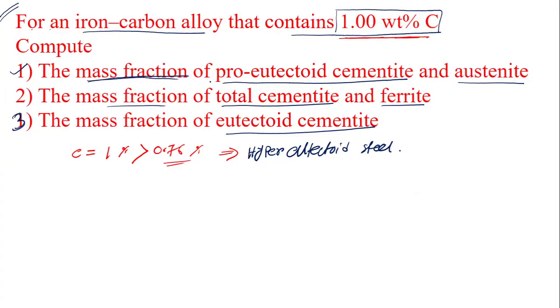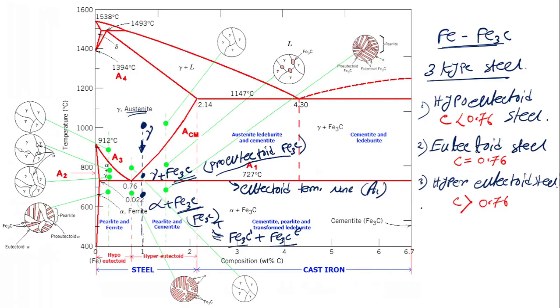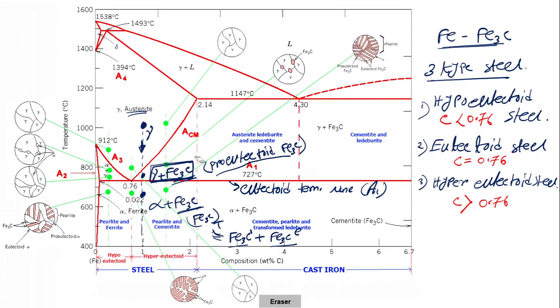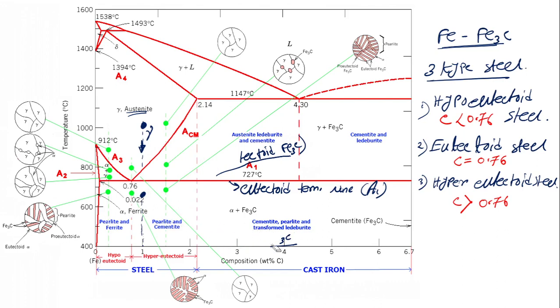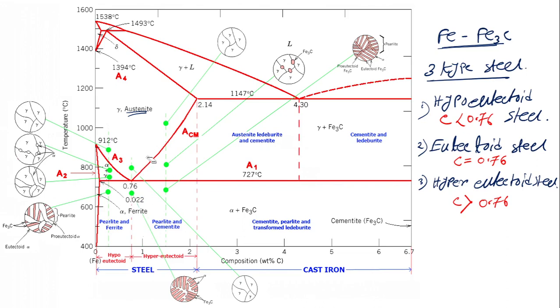Now go to question one: mass fraction of pro-eutectoid cementite and austenite. To find the mass fraction we take the help of the lever rule. For the lever rule we draw a horizontal line such that both ends touch the pure phases for which we want to find the mass fraction. Here we have gamma plus pro-eutectoid cementite, so one end touches pure gamma and the other touches pure Fe3C.